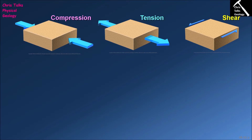At convergent plate boundaries, where we have two pieces of crust smashing into each other head-on, that's obviously going to create large amounts of compressive stress. In the case of tensional stress, also sometimes referred to as extension, our rock is being stretched — pulled in opposite directions. This is the kind of force commonly found near divergent plate boundaries where the plates are moving away from each other.